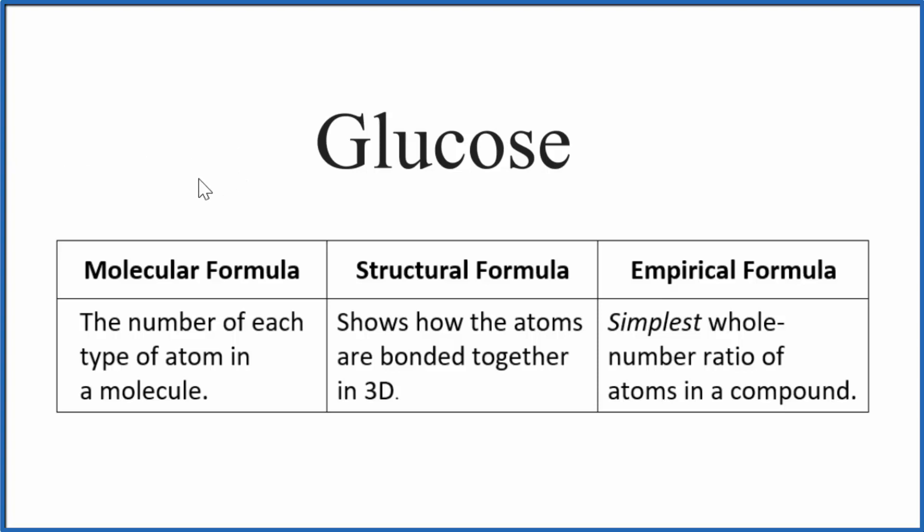You really need to memorize that glucose is C6H12O6, and this is the molecular formula for glucose. That tells us the number of each type of atom: 6 carbons, 12 hydrogens, and 6 oxygen atoms. That's the molecular formula for glucose.